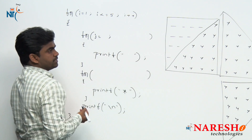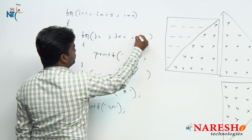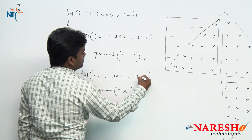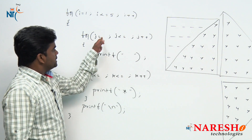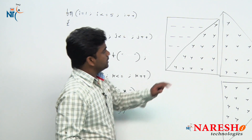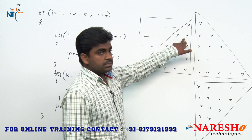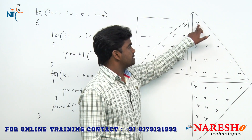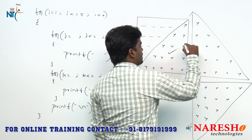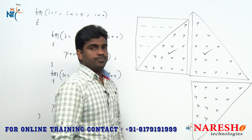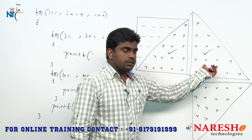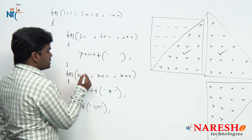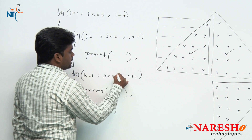Now, how to write the initialization, condition, and modifier. J value starts with something, J is less than or equals to something, J plus plus. Take one more variable: K value starts with something, K is less than or equals to something, K plus plus. The pattern for stars — 1 star, 2 stars, 3, 4, 5 — is the same as the pattern we already completed. So the same logic applies here. K value starts with 1, K is less than or equals to i.